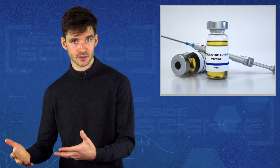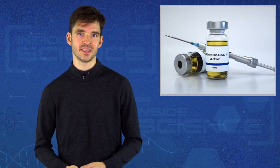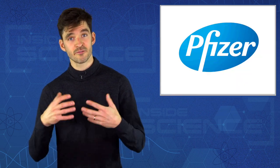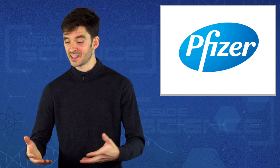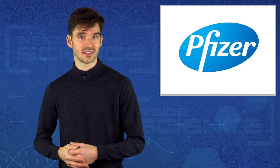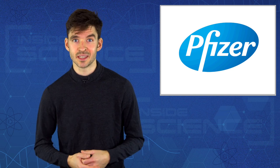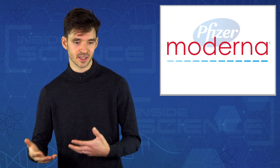That's according to preliminary results from three major companies. On the 9th of November, Pfizer reported that their vaccine was 90% effective in protecting against COVID-19. Nine days later, they bumped that up to 95% after analyzing new data. On the 16th of November, Moderna reported similar results with their vaccine, 94.5% effective.